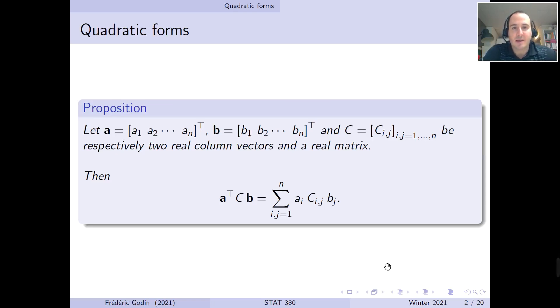So the first topic we'll discuss is quadratic forms. Consider three quantities: a column vector a, which contains elements a1, a2 until an; a column vector b, which contains elements b1, b2 until bn; and finally, a matrix C, which contains elements C_i,j, where i is the row index and j is the column index of the matrix, where i and j go from 1 to n. So here this is a square matrix of dimension n by n. The following proposition says that if we calculate the following quantity, a transpose times the matrix C times the vector b, where this is all matrix products, then this expression can be written as the sum for all indices i and j going from 1 to n.